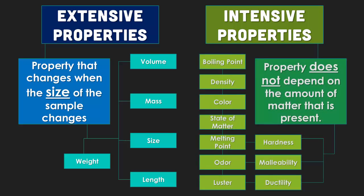Intensive properties are things that do not change and can be used to identify matter. Boiling point will never change — it doesn't matter how big or small the sample is. Other intensive properties include density, color, state of matter, melting point, hardness, malleability, odor, luster, ductility, and whether it is magnetic.